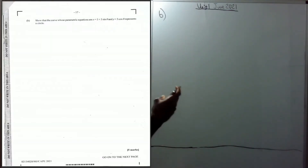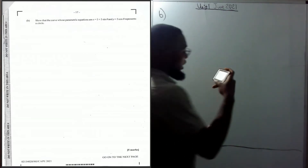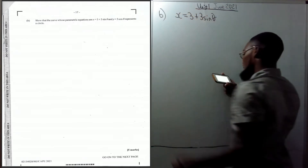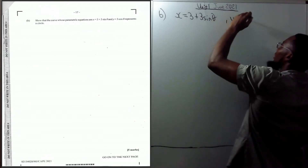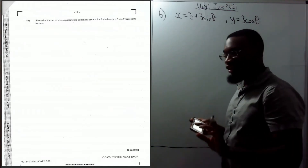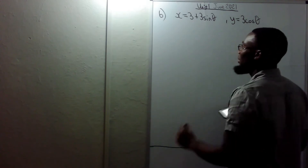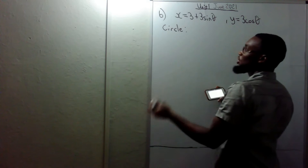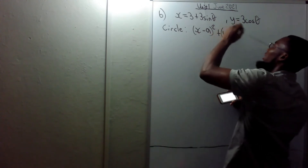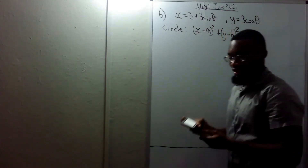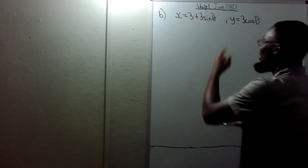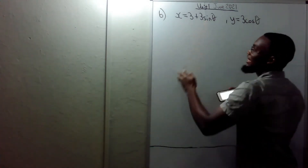Part B says: show that the curve with parametric equations x equals 3 plus 3 sin θ and y equals 3 cos θ is a circle. Remember, a circle in standard form is (x minus a) squared plus (y minus b) squared equals r squared. So the first thing is to make sin θ the subject.